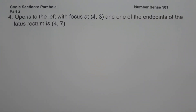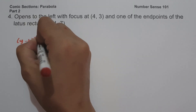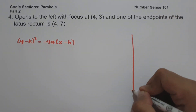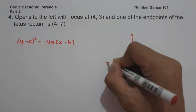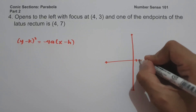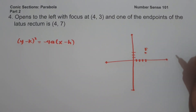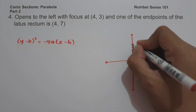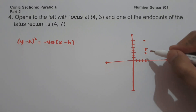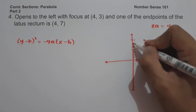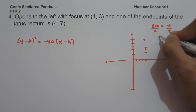In our last example, the parabola opens to the left with focus at (4, 3) and one of the endpoints of the latus rectum is (4, 7). Since the parabola opens to the left, we use the formula (y − k)² = −4a(x − h). The distance between the focus and one of the endpoints of the latus rectum is 2a = 4. Dividing both sides by 2, the value of a is 2. The focal length, which is the distance between the vertex and the focus, is 2.